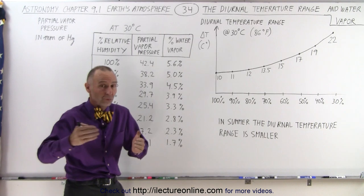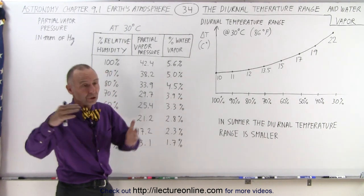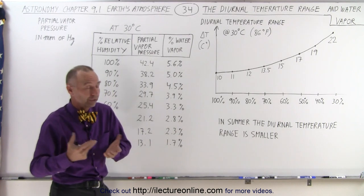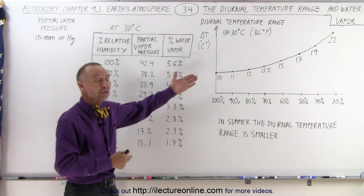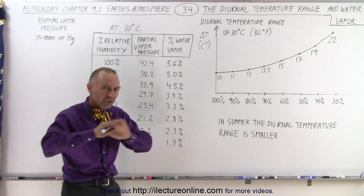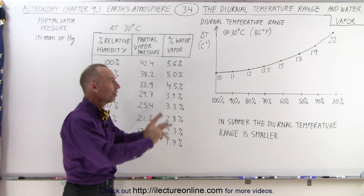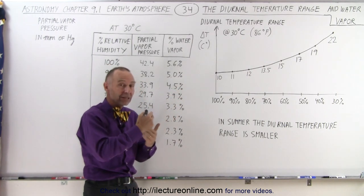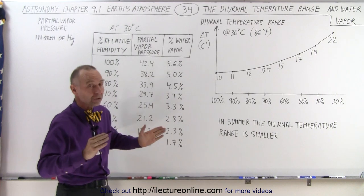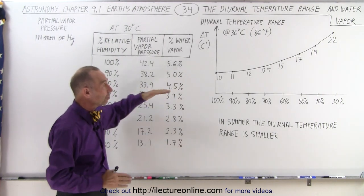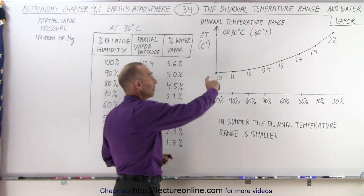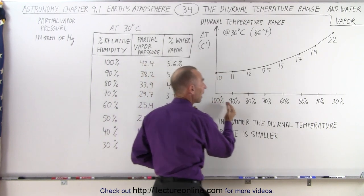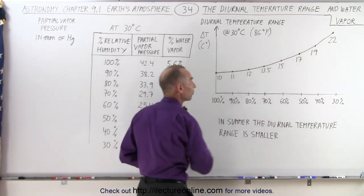There are factors that affect the diurnal temperature range that have really nothing to do with relative humidity and the amount of water vapor in the atmosphere — factors such as winds, cloud cover, and large masses of air moving around, which can cause tremendous temperature differences. But if we can separate the diurnal effect due to water vapor from all the others, we can say there's a large temperature difference between day and night depending on how much water vapor we have.